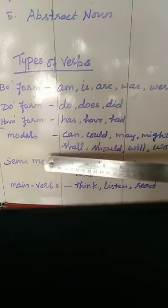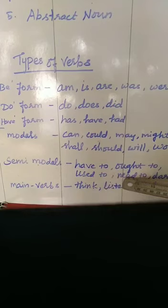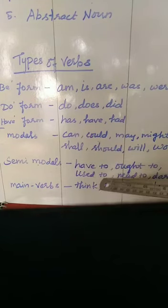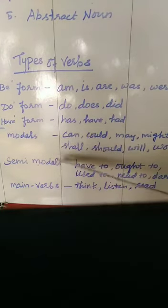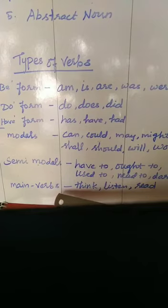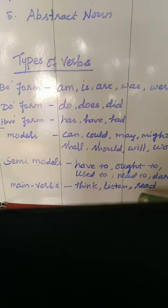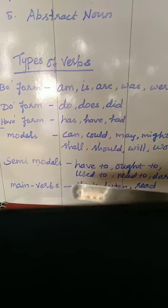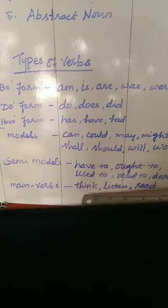Next we are moving to semi-modals. What are semi-modals? Have to, ought to, used to, need to, dare to — they are called semi-modals and they also come under modals. Then, main verbs. Main verbs are action verbs. For example: think, listen, read, dance, sit. All such words are called main verbs — they are denoting an action.